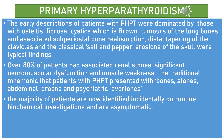Regarding primary hyperparathyroidism — early descriptions were dominated by patients with osteitis fibrosa cystica, which includes brown tumors of long bones associated with subperiosteal bone resorption. Distal tapering of the clavicles and the classical salt and pepper erosion of the skull were typical findings. Over 80% of patients had associated renal stones, significant neuromuscular dysfunction, and muscle weakness.